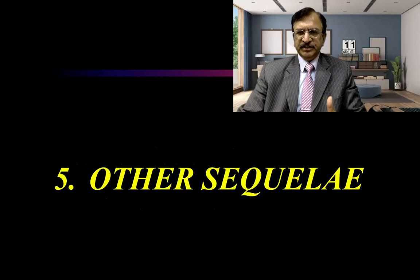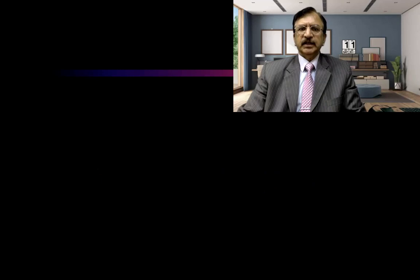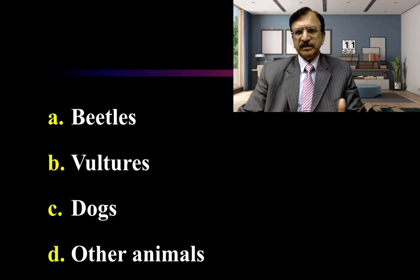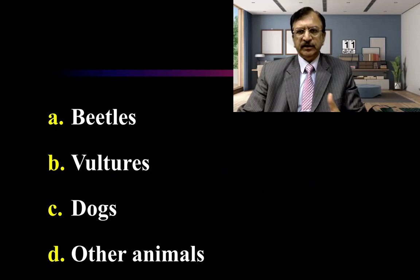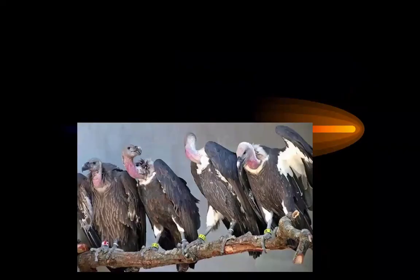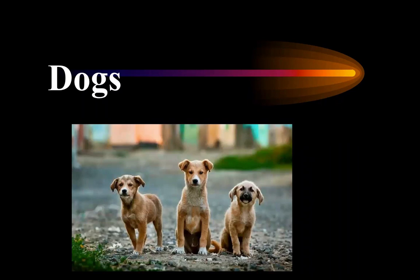Besides these putrefactive changes, other sequelae also occur. Beetles, vultures, dogs, and other animals are attracted to the putrefying body. They destroy, dismember, and eat parts of the body, also facilitating its destruction. These other animals eat the dead body and hasten the process of disintegration of the body.